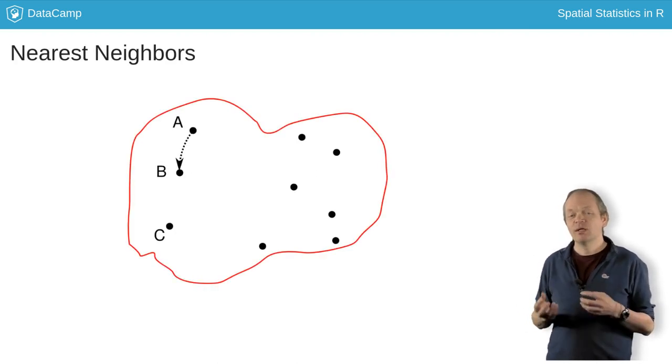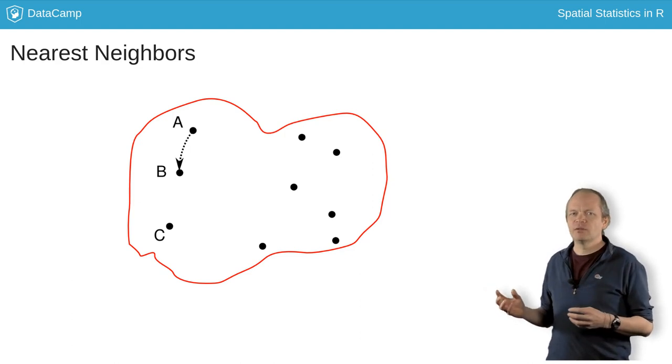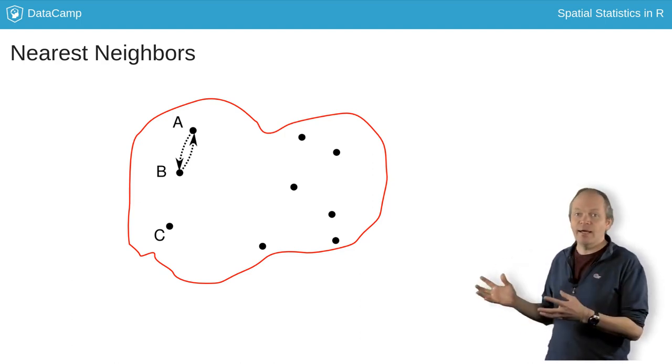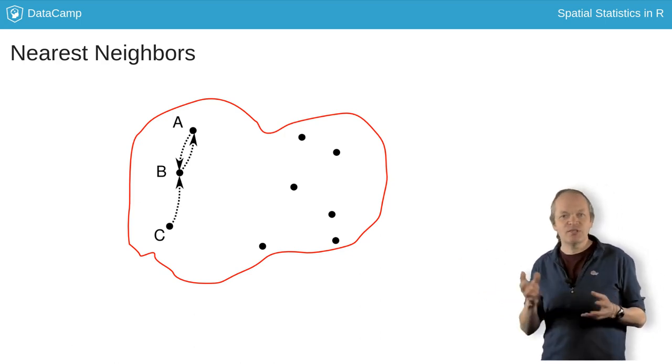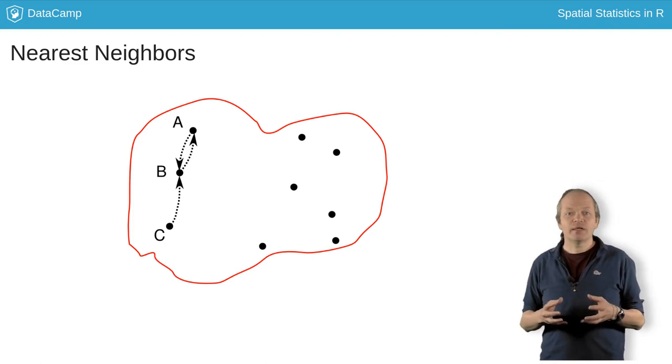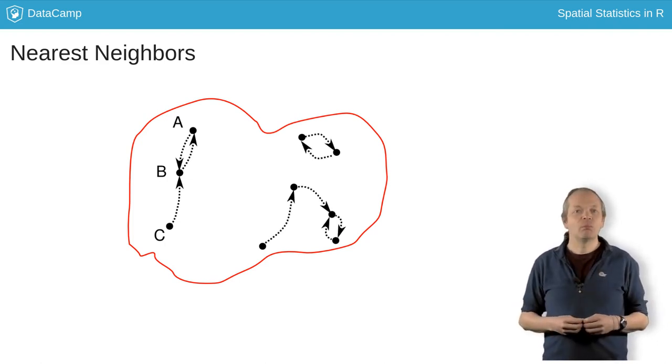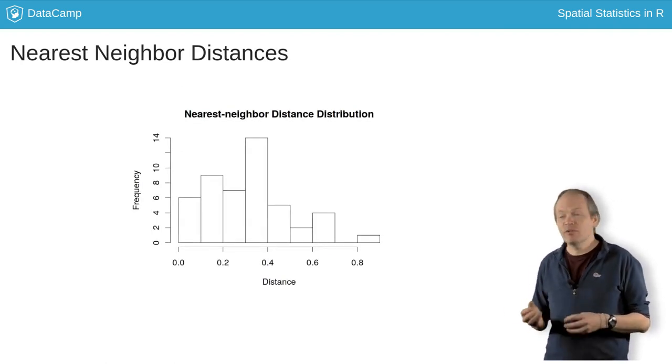One such property is the nearest neighbor distribution. Look at each event in your pattern and find the distance to the nearest event. So here, A's nearest neighbor is B, B's nearest neighbor is A, and C's nearest neighbor is B. That gives us three distances. Do this for every event. Plot a histogram to give an estimate of the probability density function of the nearest neighbor distribution.